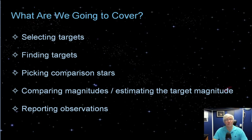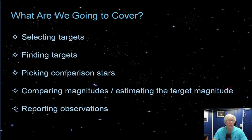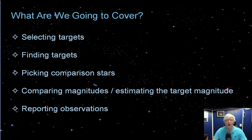Now you know what variable stars are and how useful they can be. Let me show you how to get started. I'm going to show you how to select variable stars you'd have an interest in observing — the list of stars you select will become your program stars. Then I'll show you how to find your variable star targets, how to pick comparison stars or COMPs, which are stars that don't vary in magnitude and are used as references to estimate the magnitude of the variable star. Finally, I'll cover how to report your observations to the AAVSO.